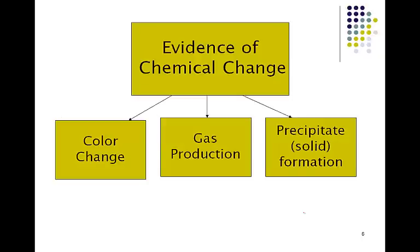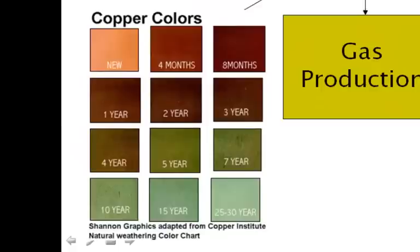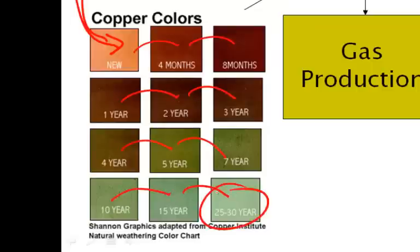There are some clues that we can use and they include things like color change. So here in color change you see this nice copper-like color and over the course of time and exposure to the elements, we start to see the copper color starting to change color into a darker orange and then eventually into a green and then into this bluish green.